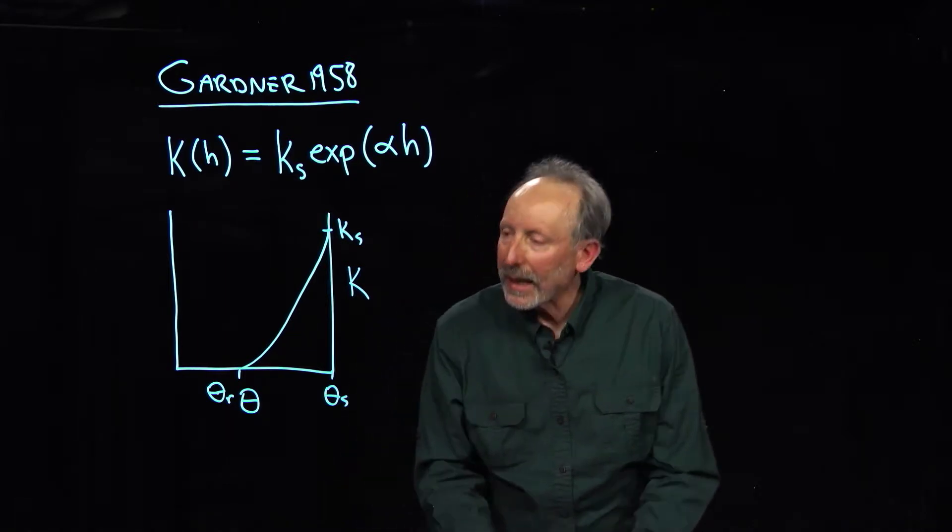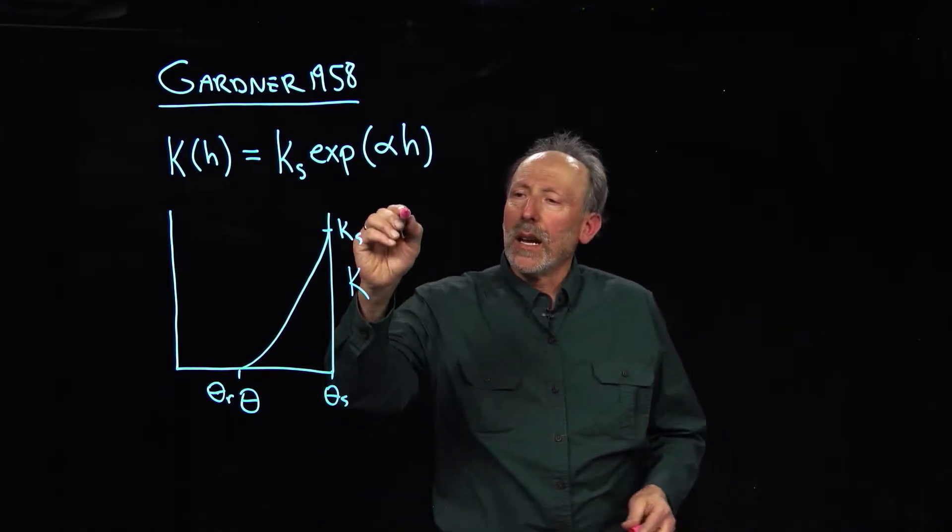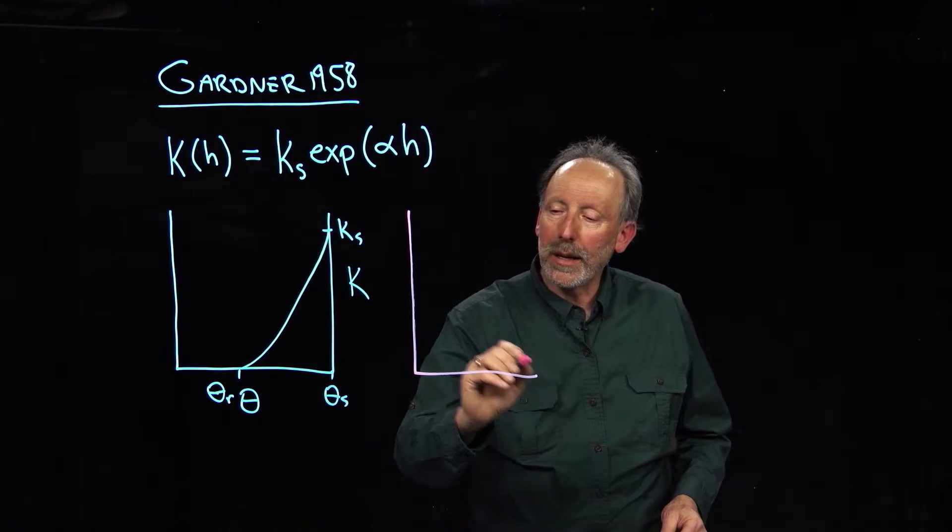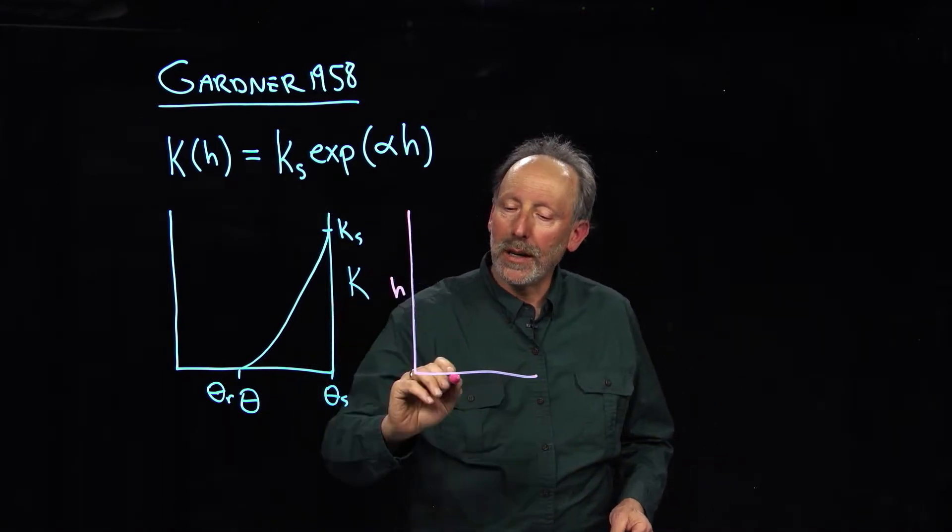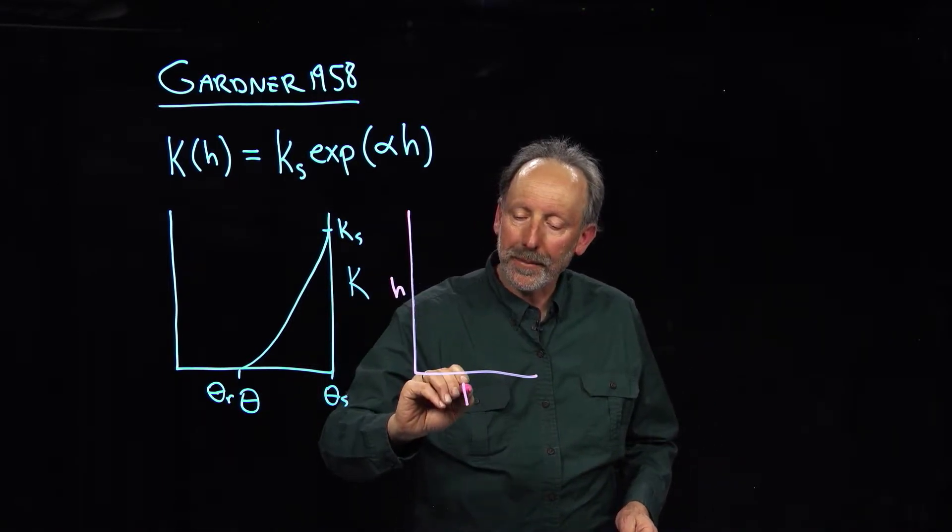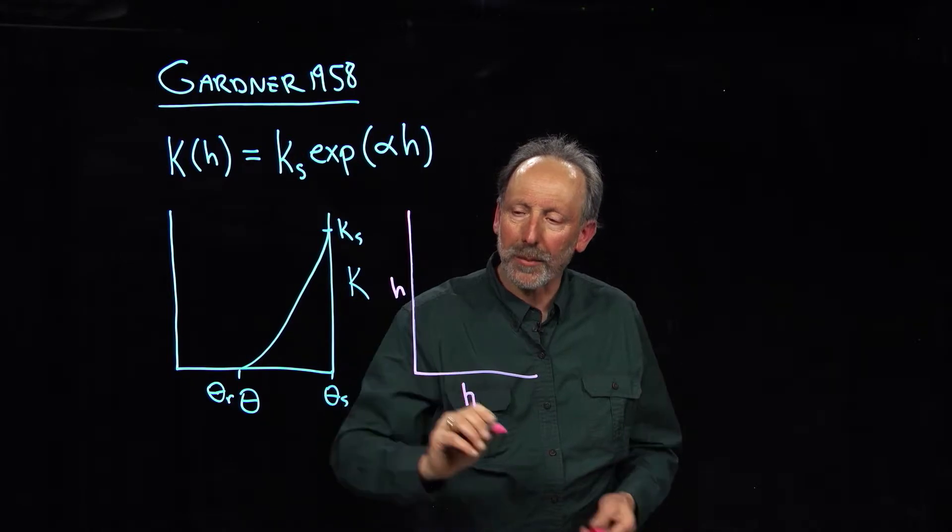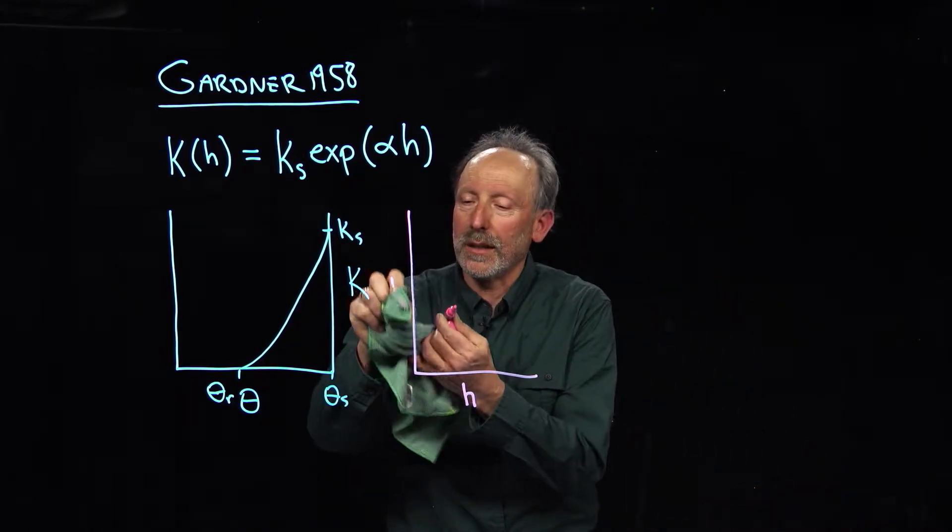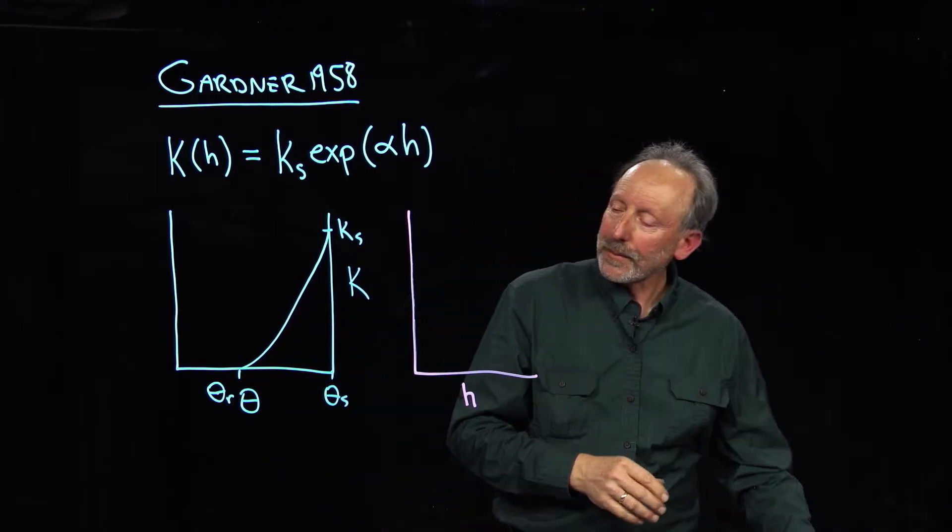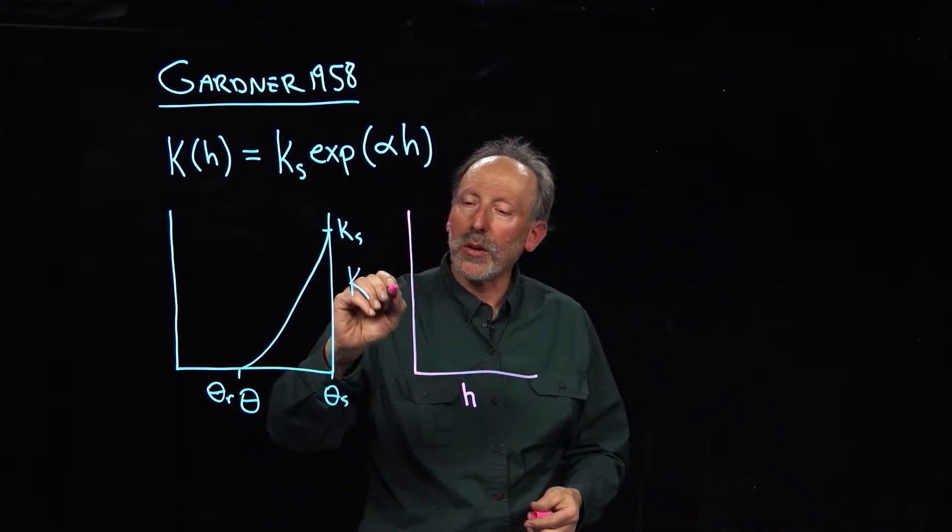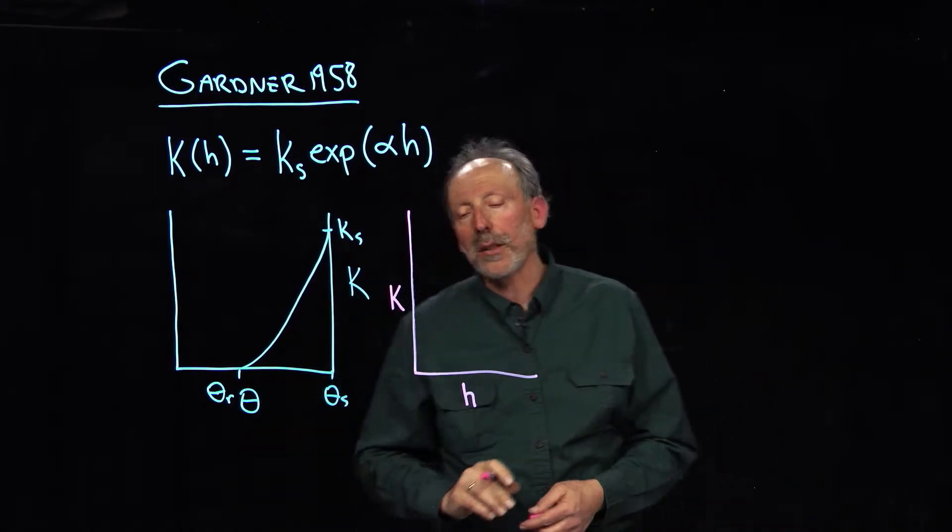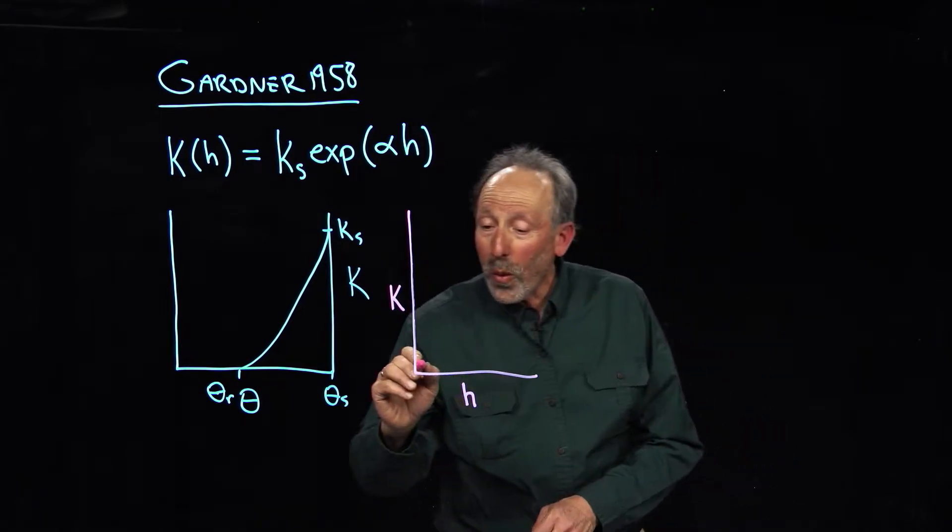But now we wanna try a slightly different approach. What we're saying is, let's plot this whole thing in terms of pressure and conductivity. Let's put pressure on the bottom here and let's put conductivity on the vertical axis. So we're gonna switch variables. Now, what do you think? When pressure is zero, what is the value of hydraulic conductivity?